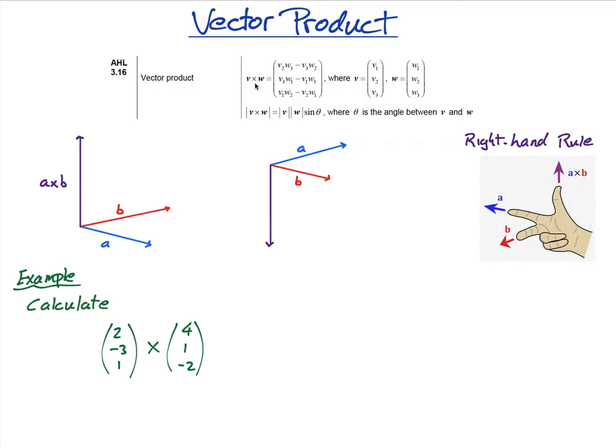So here, essentially, you're getting your first finger, your index finger, points at the first vector. It doesn't have to be a, it's the first vector, in this case v, points at the first vector. And then your second finger points at the second vector, b or w in this case. And then the cross product is your thumb, when your thumb is going straight up or perpendicular to both fingers.